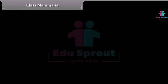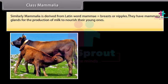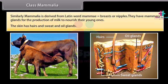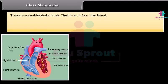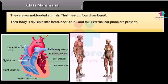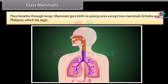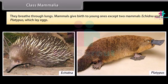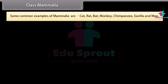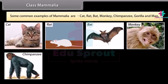Class Mammalia. The word Mammalia is derived from Latin word Mammae, meaning breasts or nipples. They have mammary glands for the production of milk to nourish their young ones. Their skin has hairs and sweat and oil glands. They are warm-blooded with a four-chambered heart. Their body is divisible into head, neck, trunk, and tail. External ears (pinna) are present. They have four limbs. The diaphragm divides the body into two cavities internally. They breathe through lungs. Mammals give birth to young ones, except Echidna and Platypus, which lay eggs. Common examples are Cat, Rat, Bat, Monkey, Chimpanzee, Gorilla, and Man.